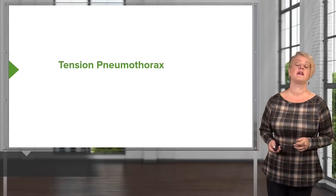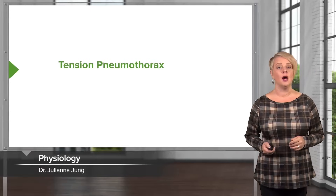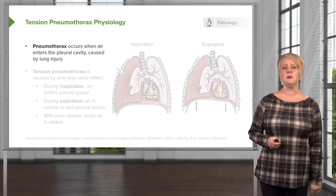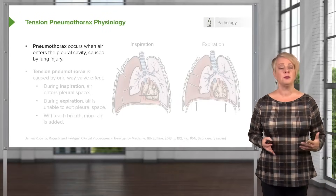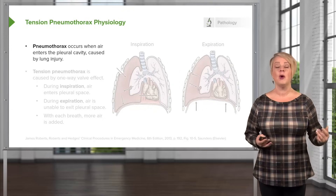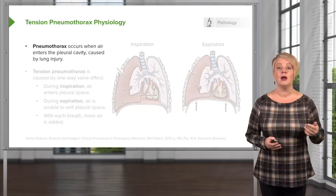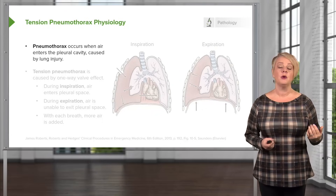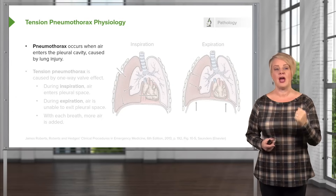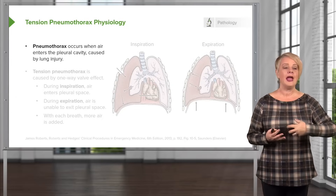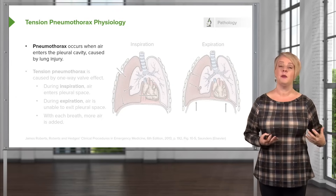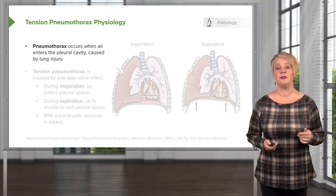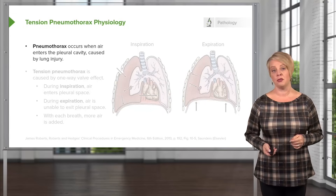Let's start with tension pneumothorax, which is probably the most common and most serious of the pulmonary life threats. A pneumothorax occurs when air enters the pleural cavity. In trauma, this typically happens because of a direct injury to the lung — such as a stab wound that penetrates the lung and allows air to leak into the pleural space. In blunt trauma, rib fractures can penetrate the lung, causing a pneumothorax.